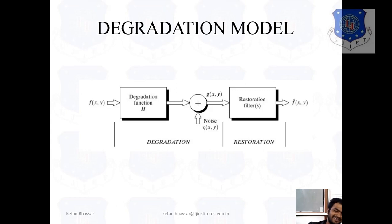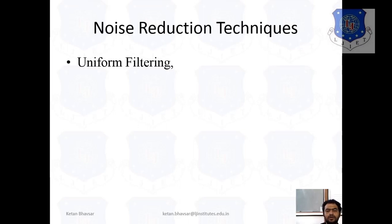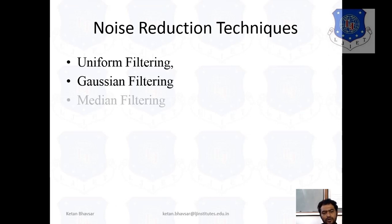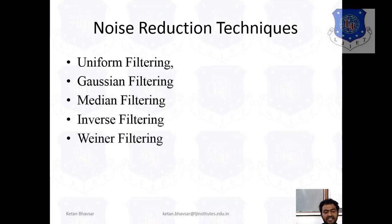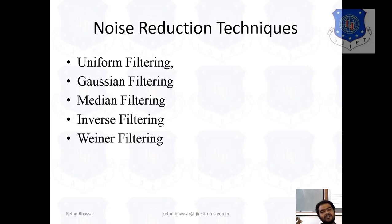Definitely we are not getting 100% accurate results. The reason is very clear because there is no ideal filter available in the practical world, so you have to work on this type of concept and try to extract the content. The noise reduction techniques include different types of filters: uniform filtering, which is essentially average filtering; Gaussian filter; median filter; mean filter; inverse filtering; and Wiener filter. These are the different filters generally used to reduce noise from the image. In a practical environment, after applying filters and extracting the original image, we use different result parameters like PSNR, SNR, and MMSE — different types of parameters to mathematically prove whether our filter is working properly or not.